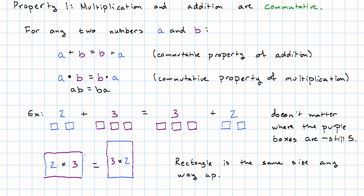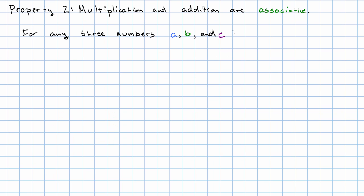The second property has to do with what happens when we add three numbers together or multiply three numbers together. Multiplication and addition are associative. They have the associative property. The associative property says if you give me any three numbers, A, B, and C, we can add the first two together and then add the third one, or we can add the second two together and then add that to the first one. That's the associative property of addition.